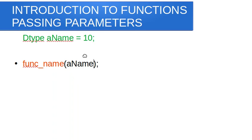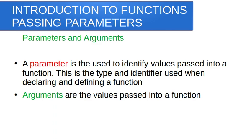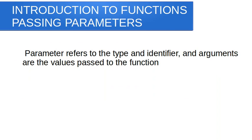Arguments are the values that you pass in whenever you're calling a function. When calling a function and passing a variable like a name, that variable is the argument. When passing a direct value like 10, that is also an argument. So arguments are the values passed when calling a function, while parameters are the data types and identifiers used when defining and declaring a function — they identify the values that have been passed to the function.